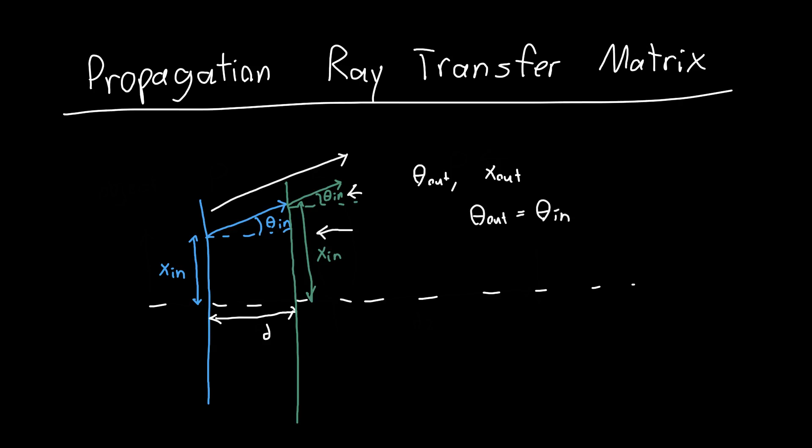But this x-coordinate does change. So there's this delta x right here, a change in the x-coordinate. And we can just use geometry to figure out what that is, because delta x is one side of a triangle and d is the other side of the triangle. So delta x over d is just equal to tangent of theta in.